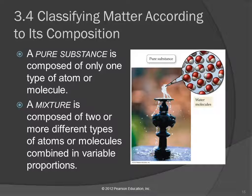We can also classify matter according to its composition. Classifying things — like if you took a bowl full of buttons, you could sort them different ways: by size, by the number of holes, or by color. So we're exploring different ways to classify matter. Another way is by its composition. There are two broad categories: pure substances and mixtures.